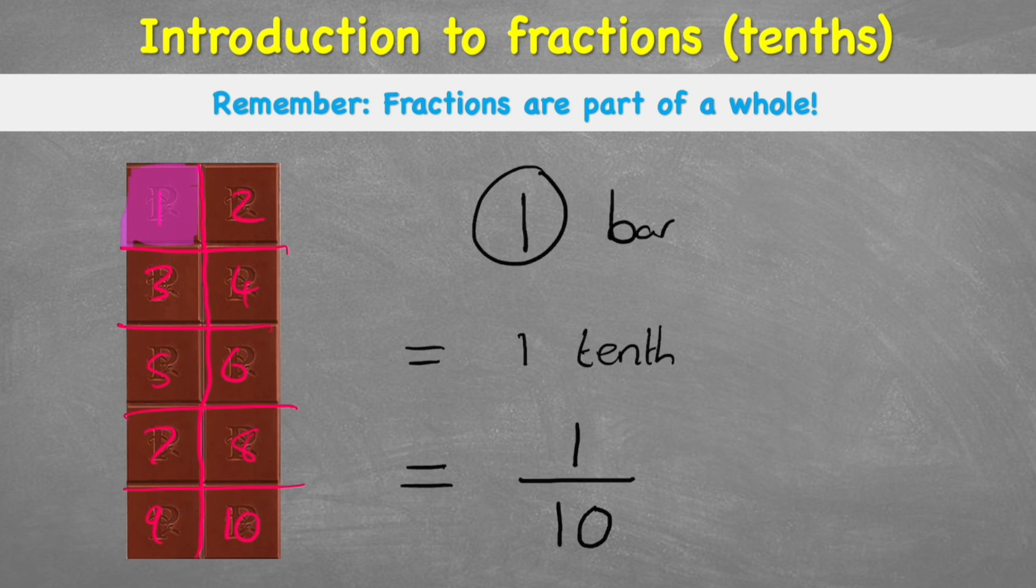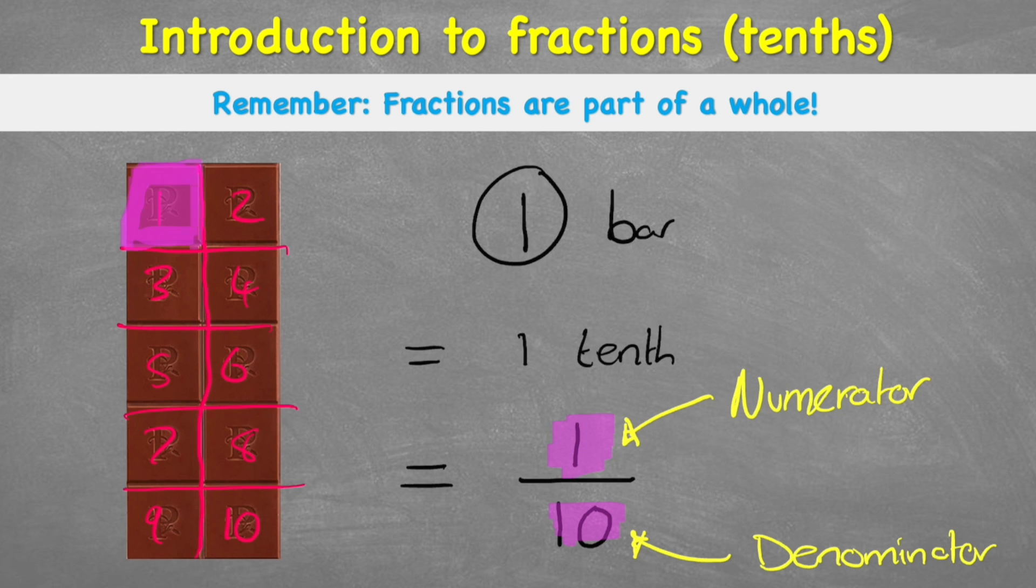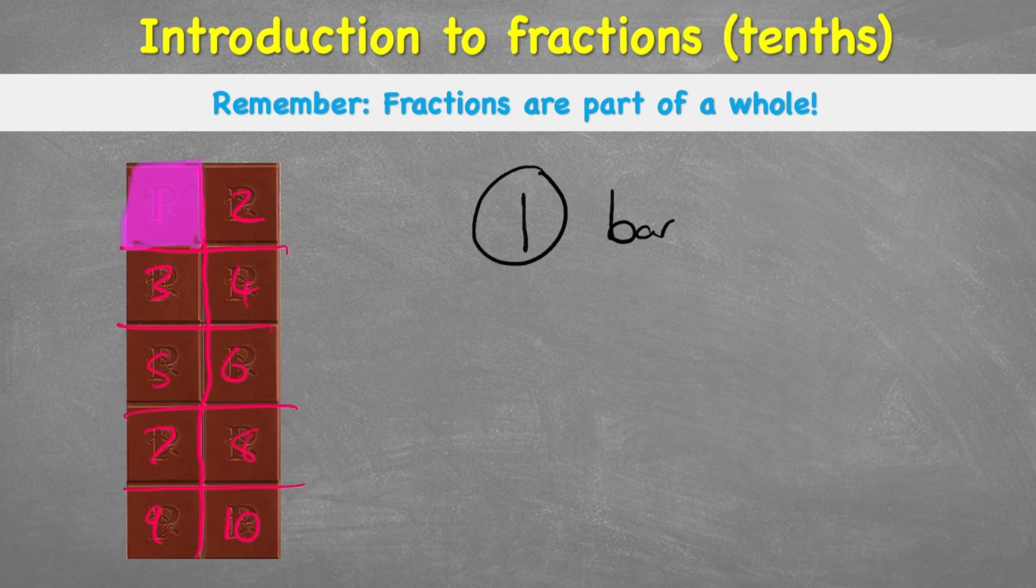Now at this point, it's quite important to learn what we call these different numbers. The number on the top is the numerator. And the number on the bottom we call the denominator. And their jobs are pretty important. The number on the bottom shows how many we've split our whole bar into. In this case, we split it into ten. And the numerator, the number at the top, shows how many we're focusing on. How many we're looking at. And in this case, it would be one.